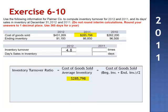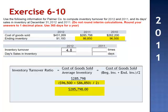For 2011, cost of goods sold is $285,798 divided by beginning inventory $96,500 plus ending inventory $86,850 divided by 2. Cost of goods sold divided by average inventory $91,675 — inventory turned 3.1 times.